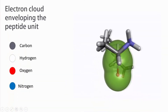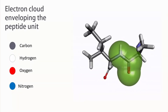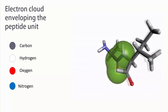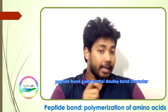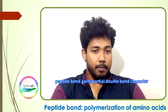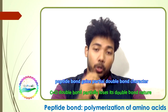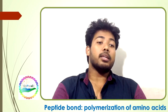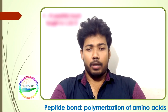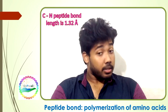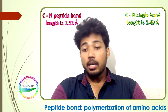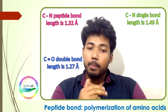Here is a schematic diagram of the electron plough overlapping the atoms defining the peptide bond. Due to this overlapping, the peptide bond gains a partial double bond connector and the CO double bond partially loses its double bond nature. This becomes clear just by looking at the bond lengths. The CN peptide bond is 1.32 Å — shorter than the CN sigma bond length of 1.49 Å and longer than the CO double bond length of 1.27 Å.